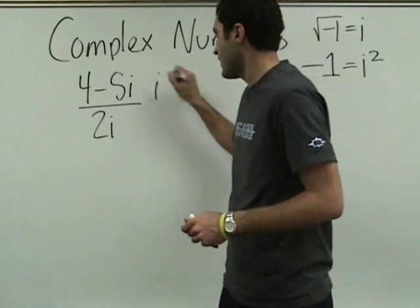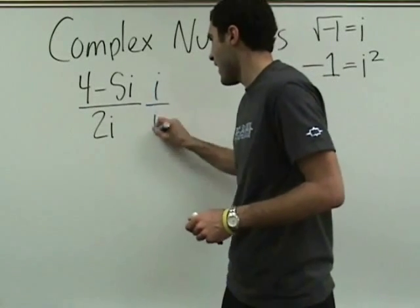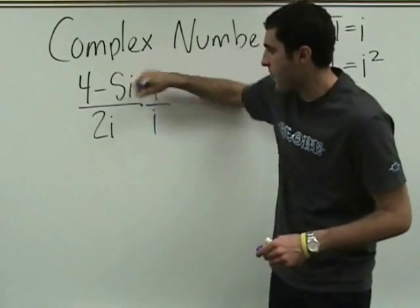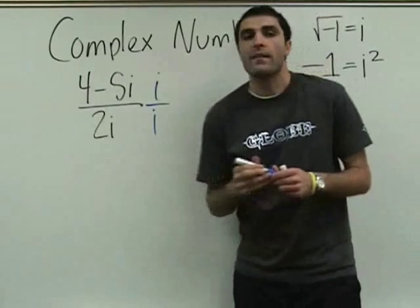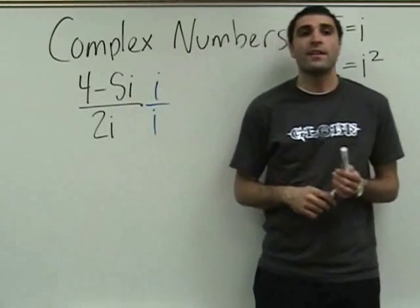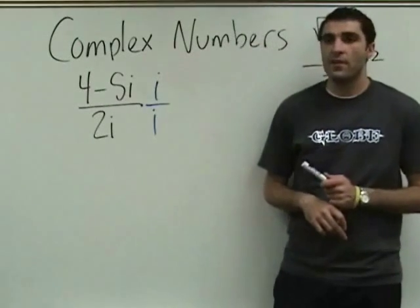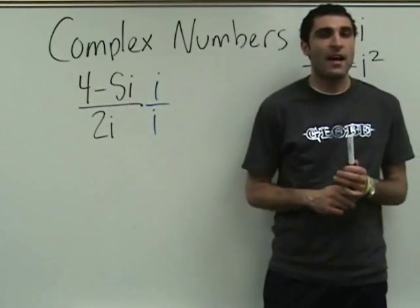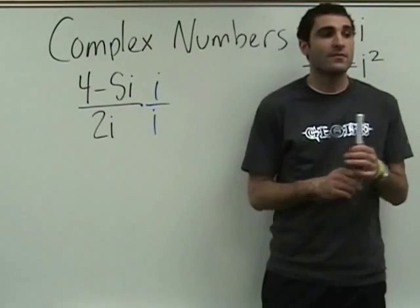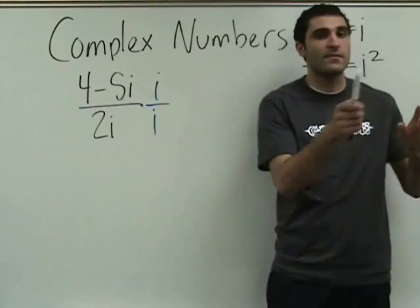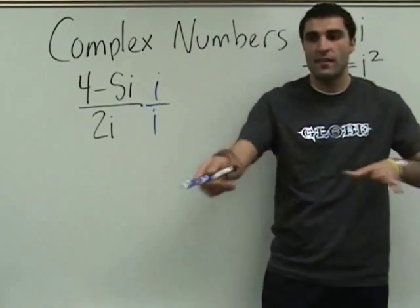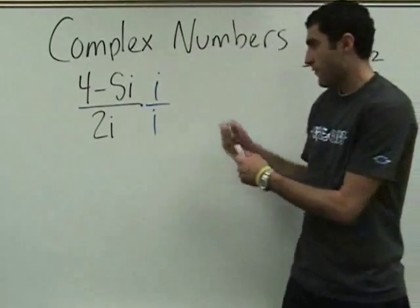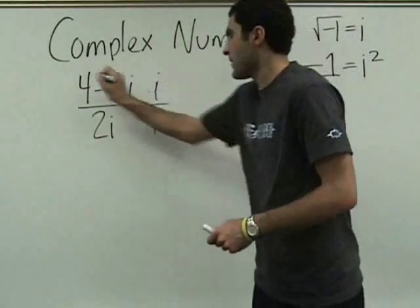So here comes i over i, multiplying top and bottom by i. And we distribute on the top. Volunteer to distribute the top — 4i.